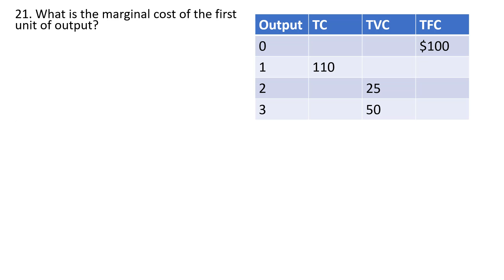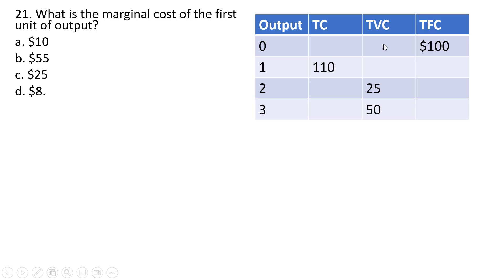Question 22. We have a table — what is the marginal cost of the first unit of output? At zero units of output, total variable cost is zero, and total cost equals total fixed cost, so total cost is $100. At one unit of output, total cost is $110. The increase in total cost going from zero to one unit is $10. Answer choice A.